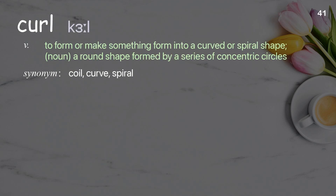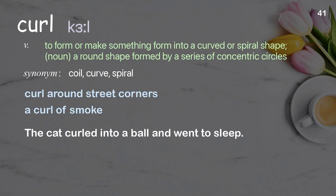Curl: to form or make something form into a curved or spiral shape. As a noun: a round shape formed by a series of concentric circles. Examples: curl around street corners; a curl of smoke. The cat curled into a ball and went to sleep.